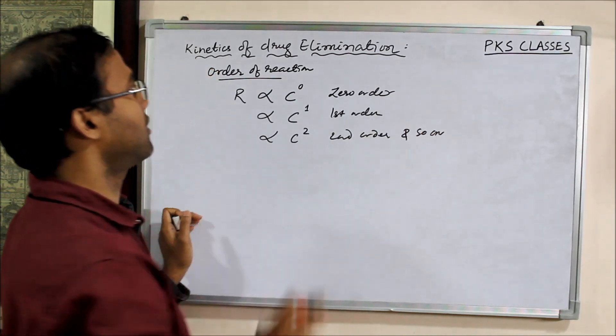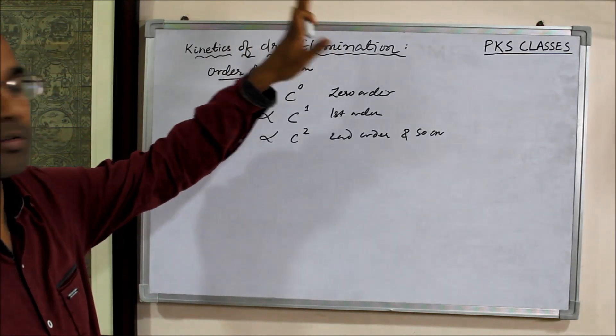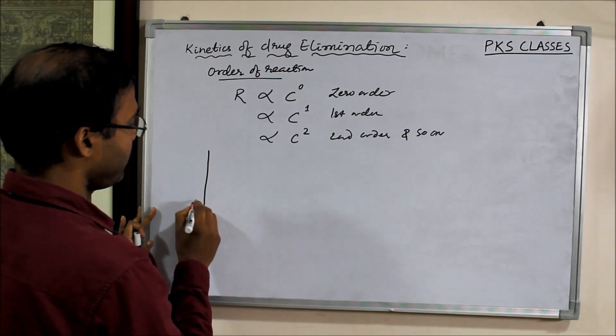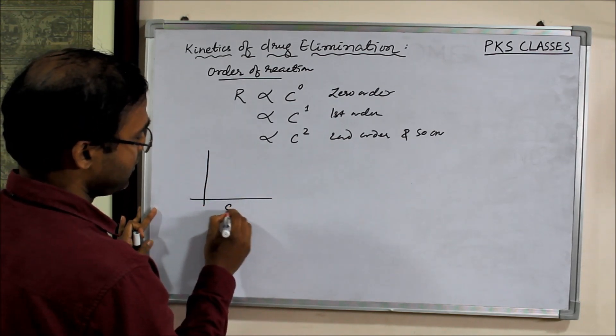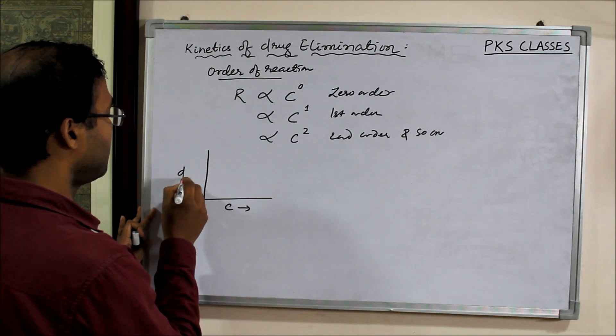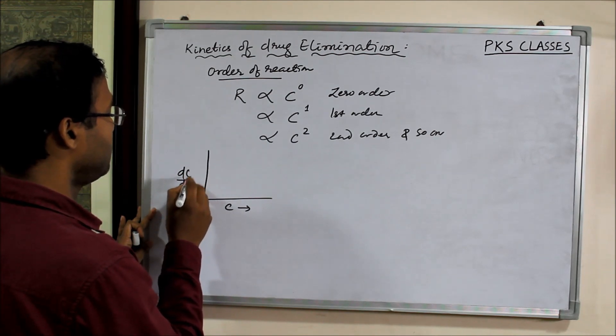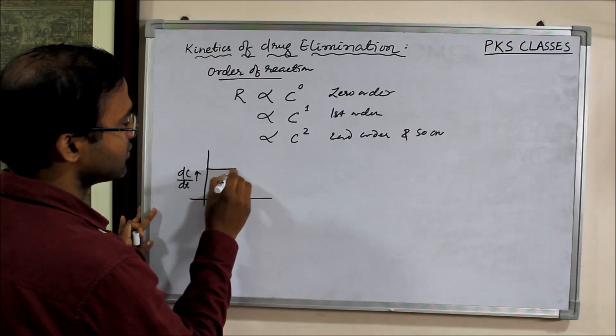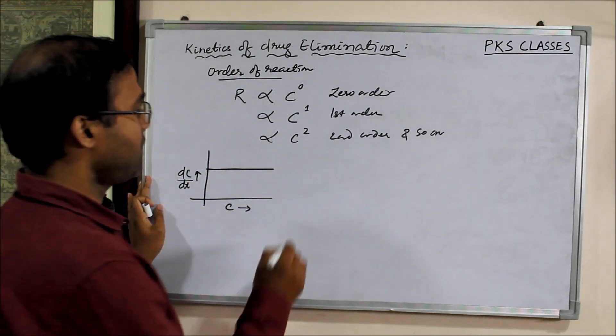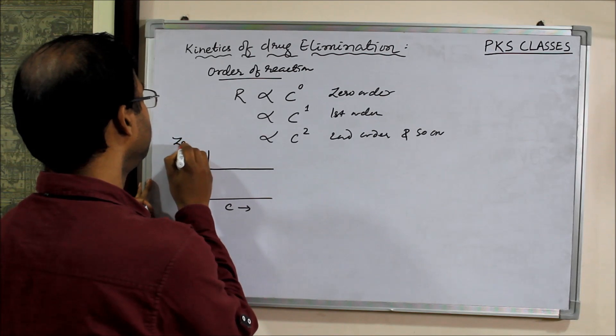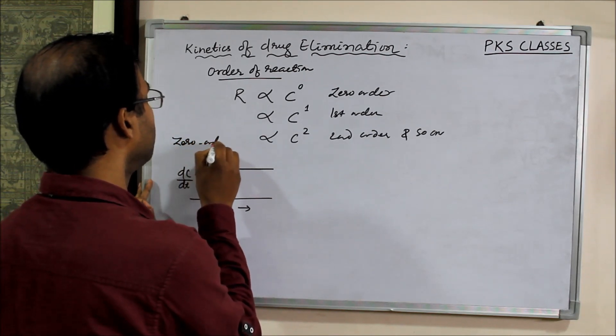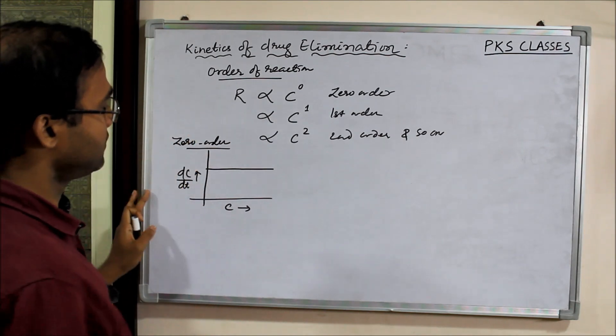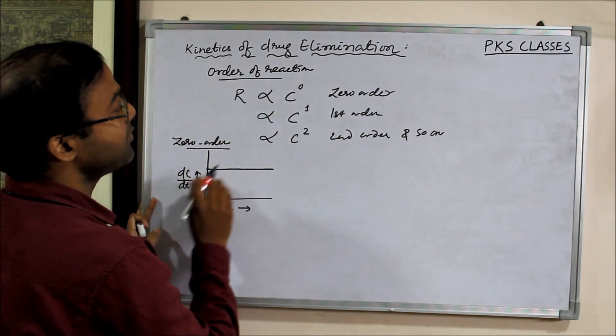We can have different orders of elimination or orders of reaction. For zero order reaction, if you plot a graph between concentration and the rate DC by DT, then the rate of reaction is always constant. In case of zero order, the concentration of the drug remains constant.